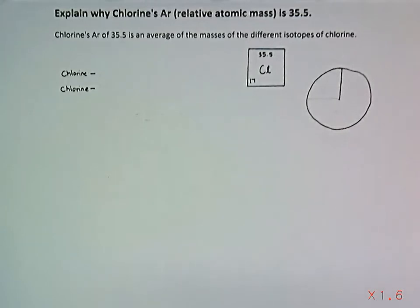Well, today I'm going to tell you why chlorine has a relative atomic mass of 35.5. The answer being that 35.5 is the average of the masses of the different isotopes of chlorine.